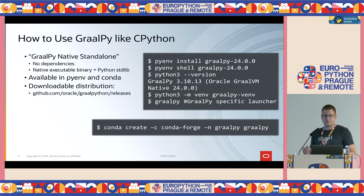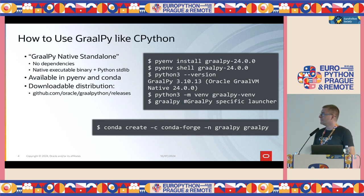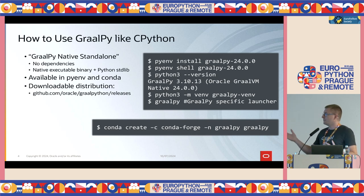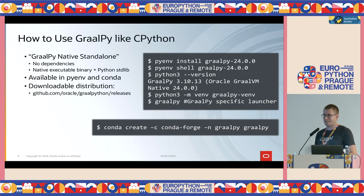If you want to use GraalPy in this mode, you can through pyenv or conda. You can say 'pyenv install graalpy-desired-version'. If you feel adventurous, you can say 'pyenv install graalpy-dev', which will install the latest development build. Then you can say 'pyenv shell graalpy' and your version, and your shell will switch to using GraalPy instead of the normal system Python. So if you say 'python3 --version', you will see you're running on GraalPy, and you can use it as you're used to — create a virtual environment, pip install packages, etc.